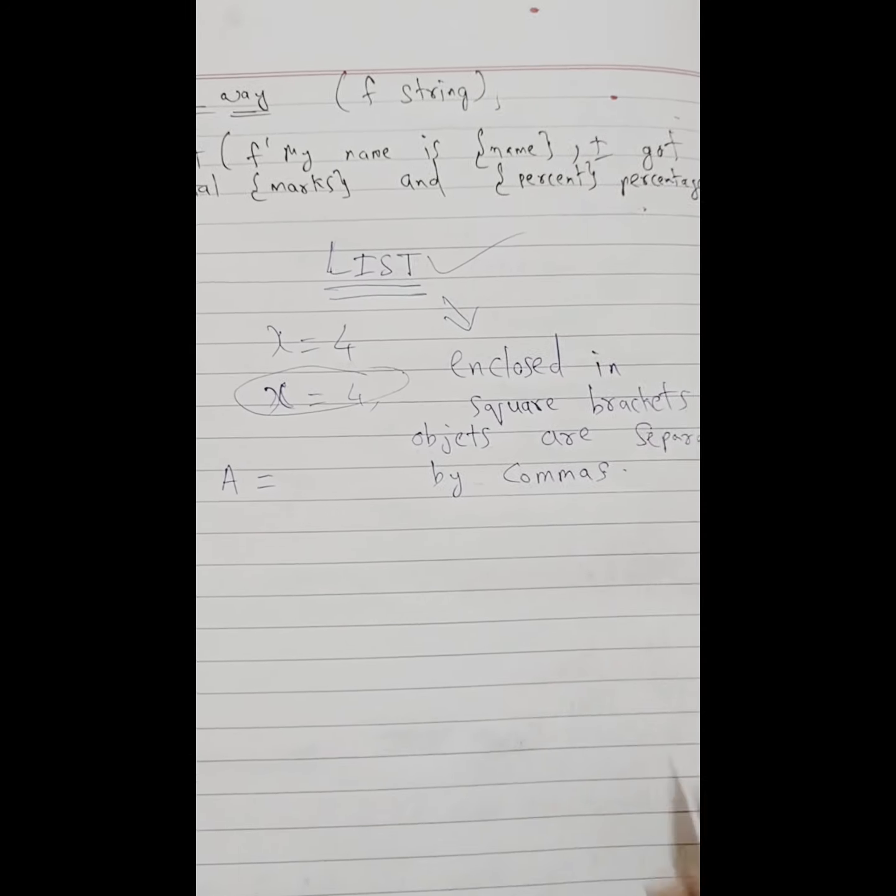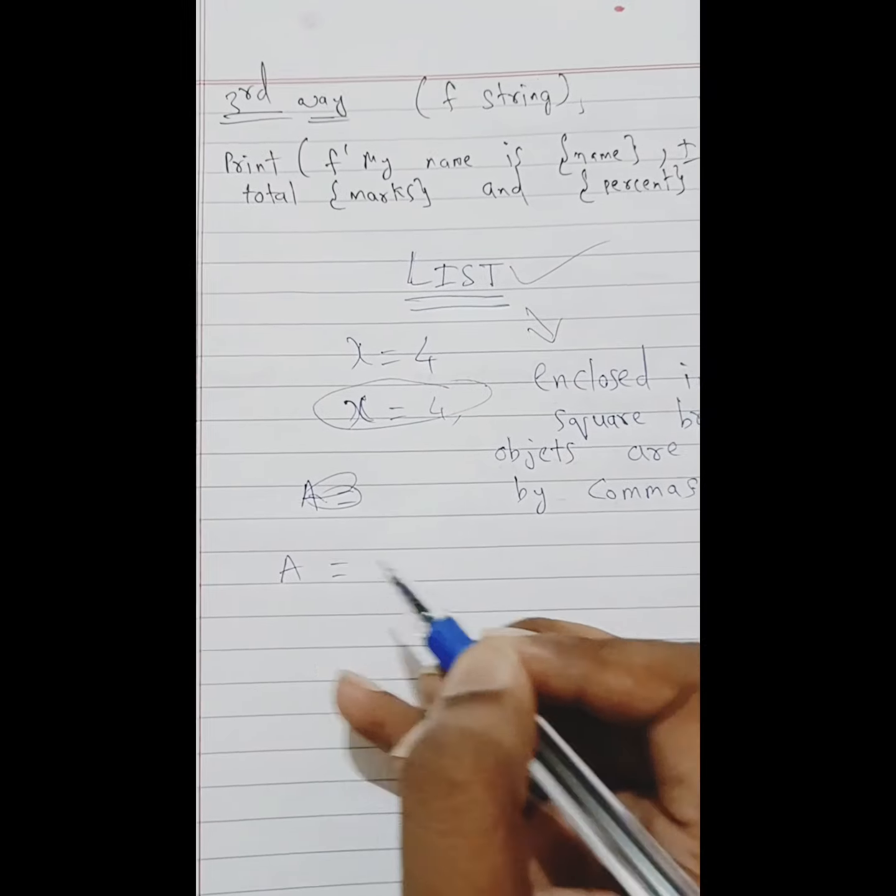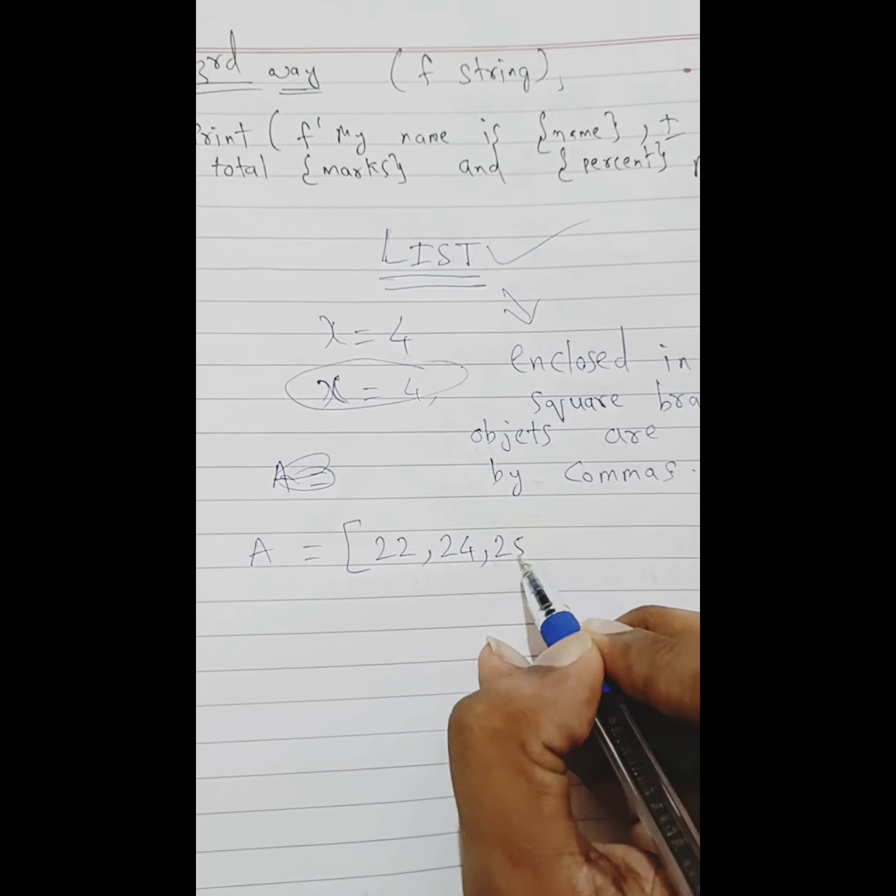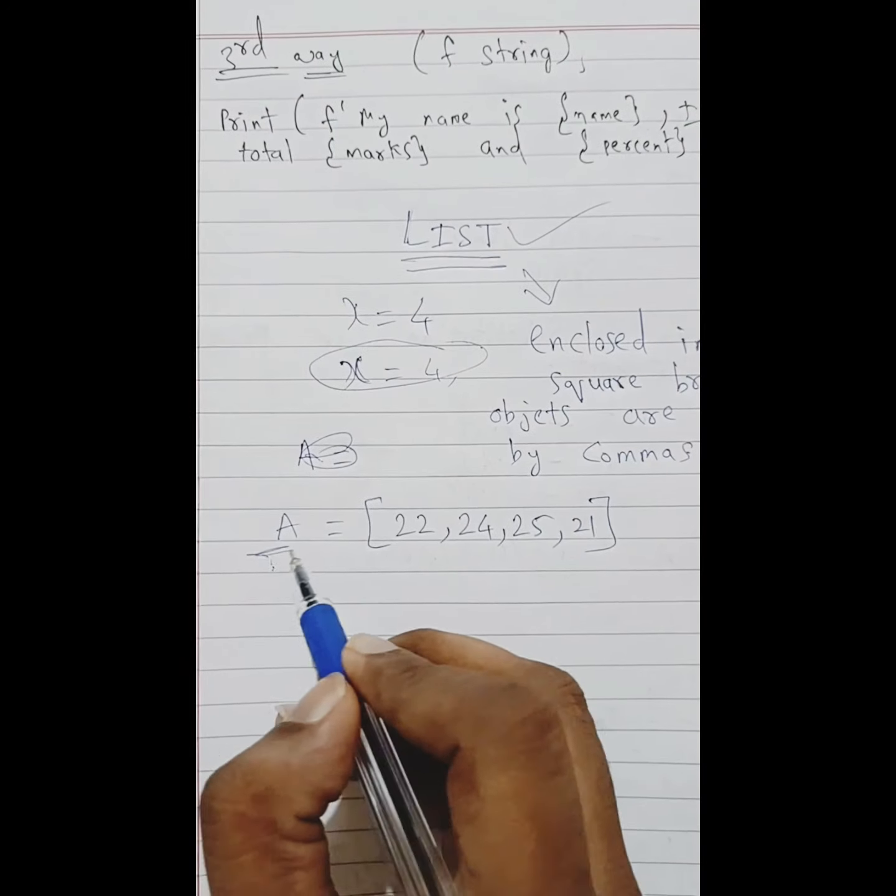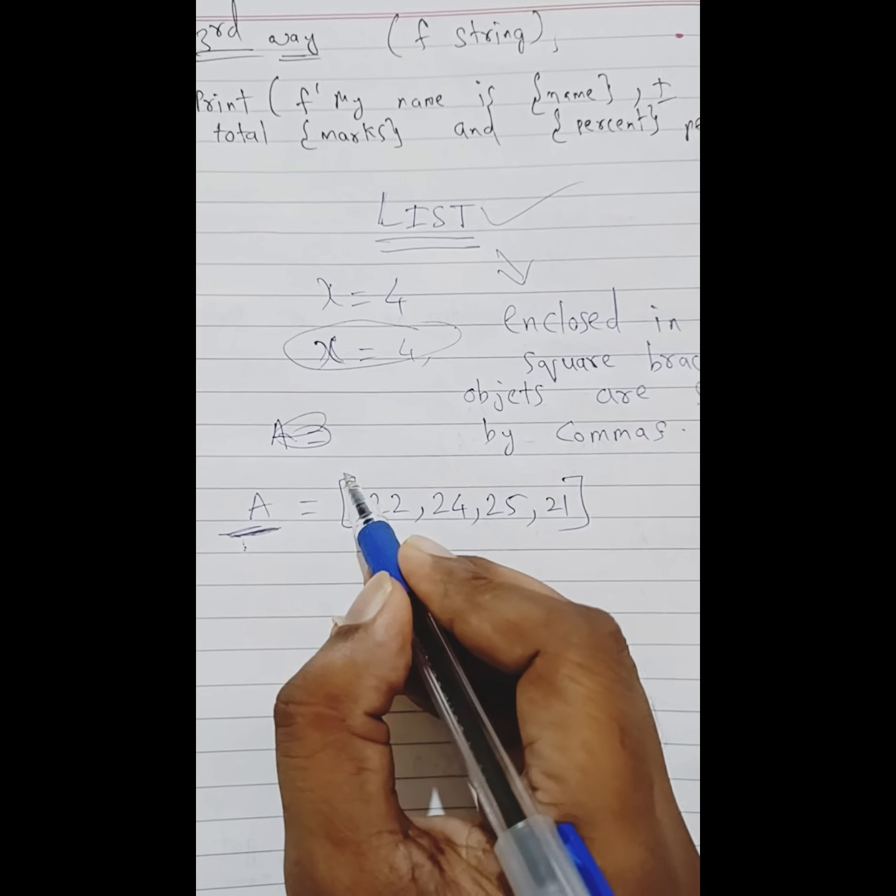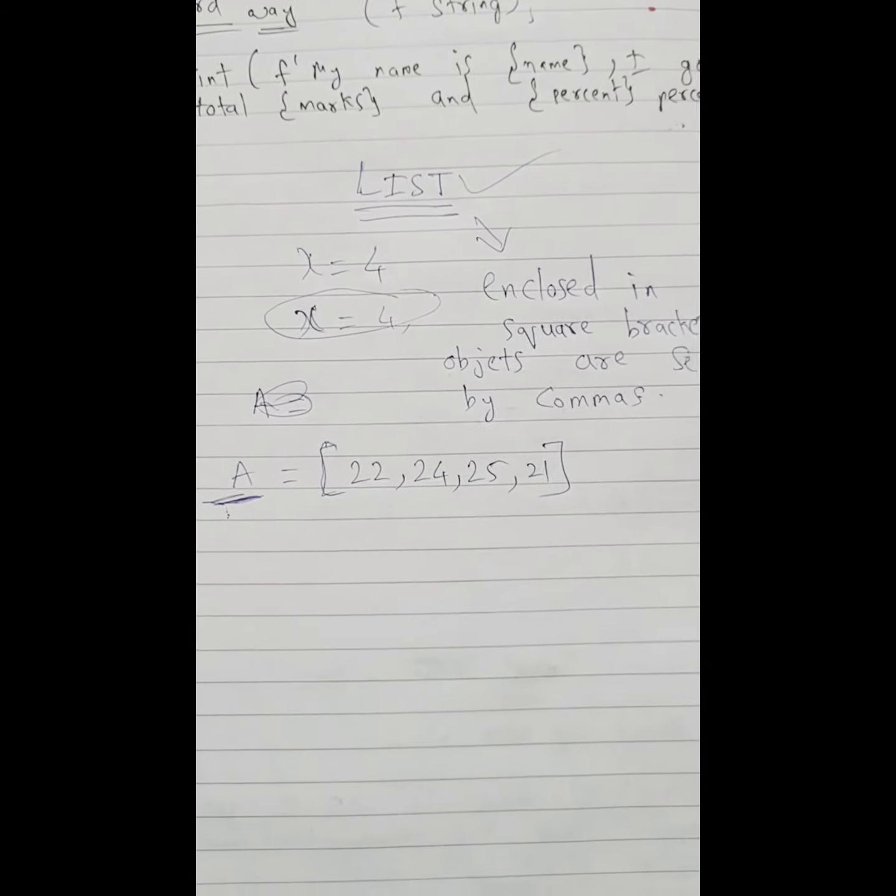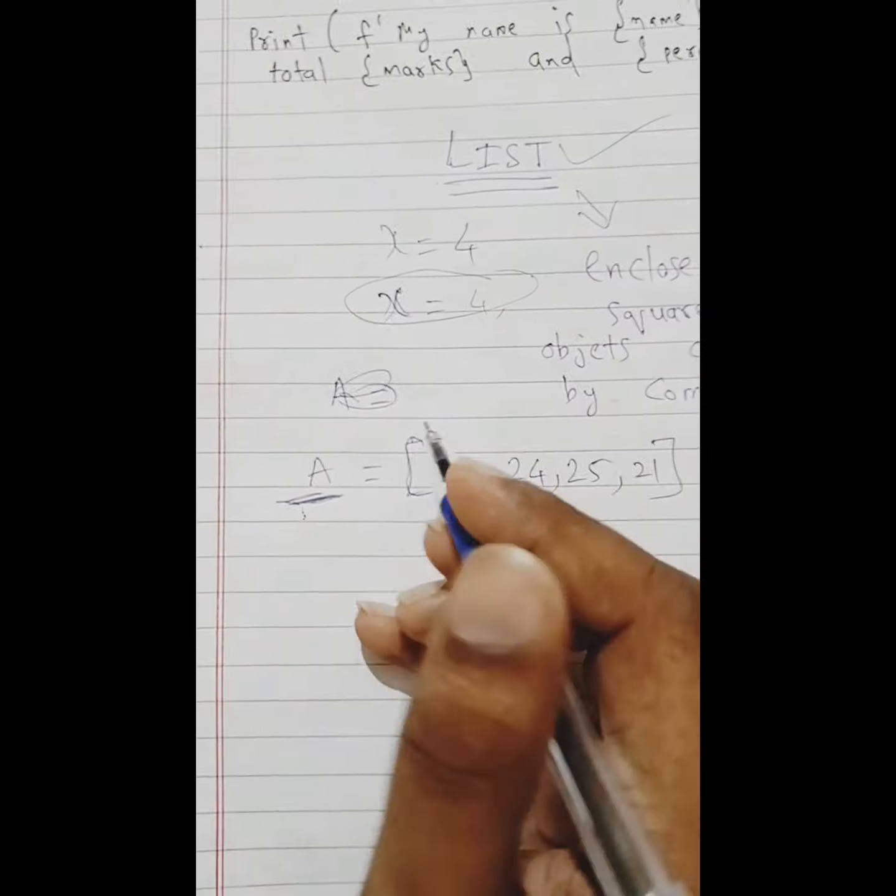Enclosed using square brackets. Let us consider A assigned 22, 24, 25, and 21. So now you can see here we have assigned a list enclosed by these square brackets with multiple values, and that sequence we have separated.